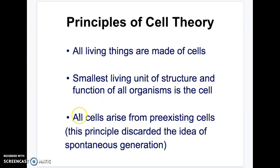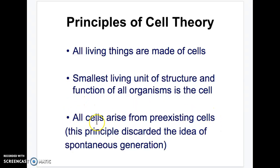And the third: all cells come from other cells, or pre-existing cells. This basically finally got rid of the idea of spontaneous generation — life from non-life — where you could have frogs come from mud and maggots from meat. Now we know that the only way you can have cells pop up is they come from other cells. These are the three parts of the cell theory.